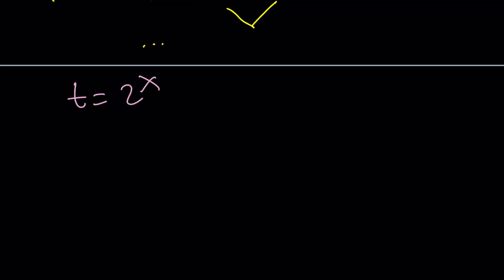So our expression, which is 16 to the x plus 4 to the x plus 1 divided by 4 to the x plus 2 to the x plus 1 becomes... Now, think about it. 16 is 2 to the 4th. So this is going to be t to the 4th power. This is going to be t squared. This is going to be 1.